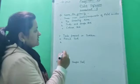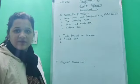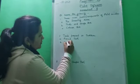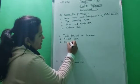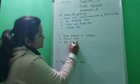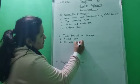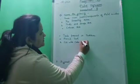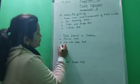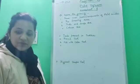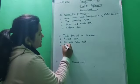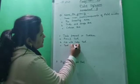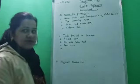The next tool present in the tool box is fill with color tool. After that is the text tool.